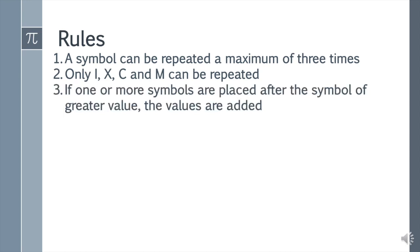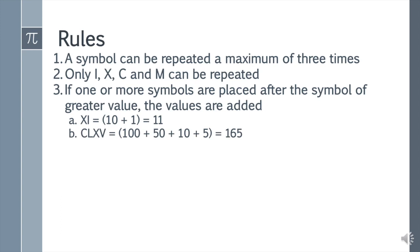If one or more symbols are placed after the symbol of greater value, the values are added. For example, XI: 10 plus 1 equals 11. CLXV: we are adding all the values — C is 100, L is 50, X is 10, V is 5, so 100 plus 50 plus 10 plus 5 equals 165. MCC: M means 1000, C means 100, C means 100 — so 1000 plus 100 plus 100 equals 1200.